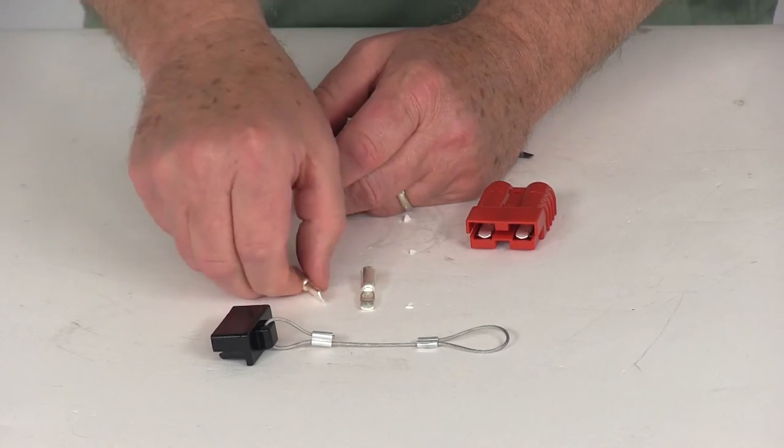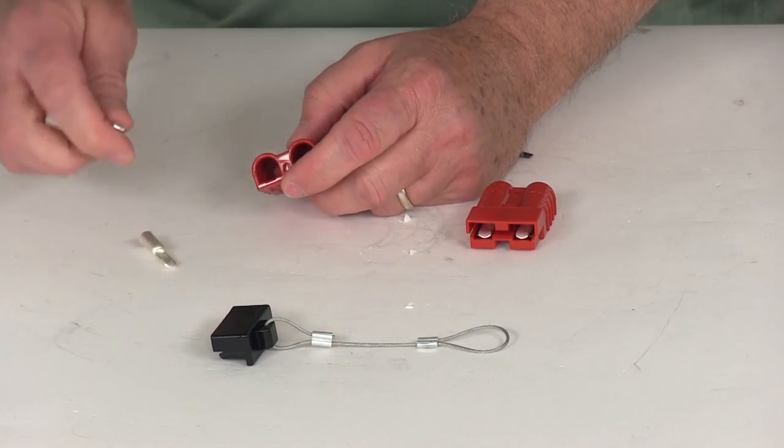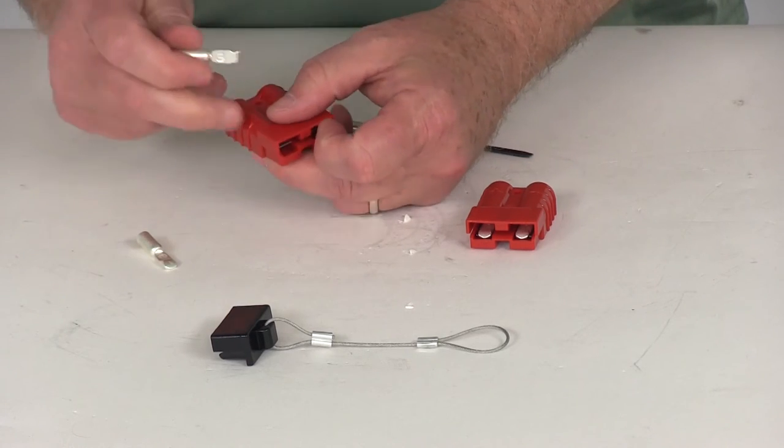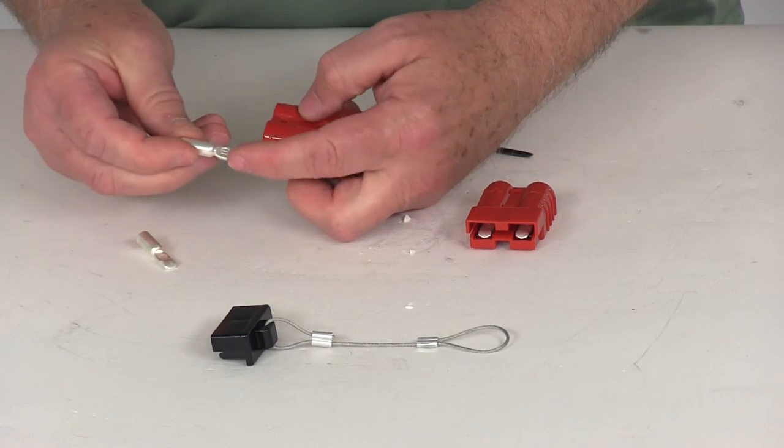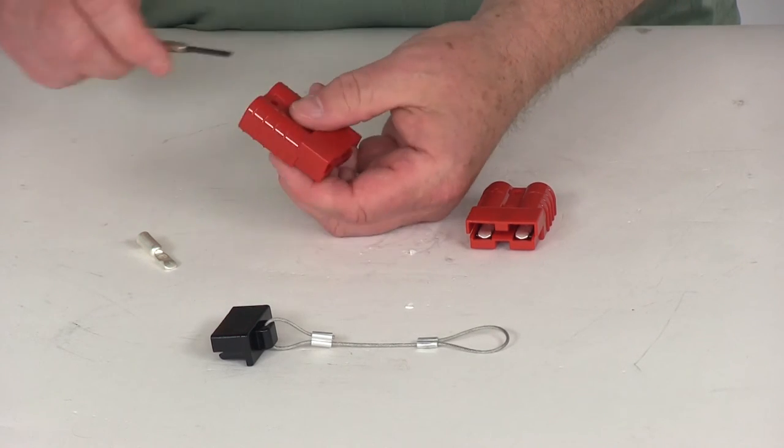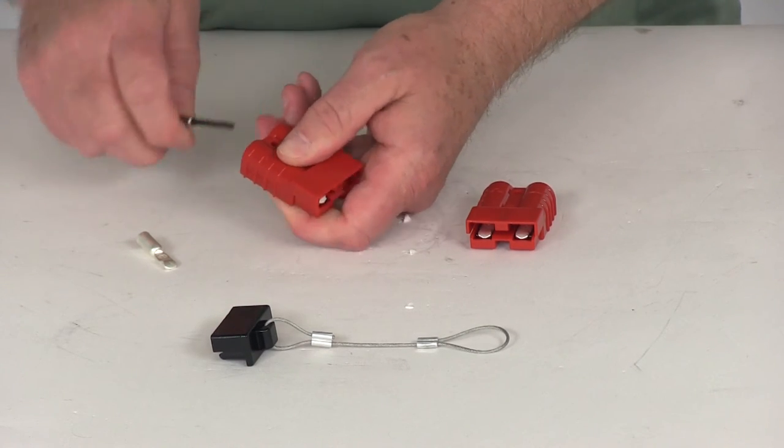Over here you'll go ahead and do the same. Take your wires from your power supply, run it into there. Again make sure you get your positive and your negative wires lined up correctly. Put the hook down and again with the wire just push it all the way in.